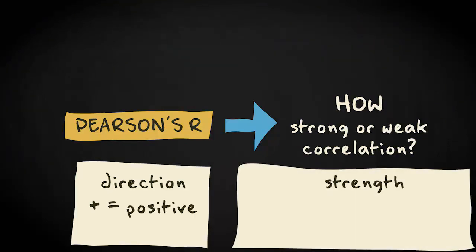A positive Pearson's R indicates that the correlation is positive, and a negative correlation indicates that it is negative.